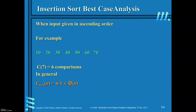Now for the best case analysis. Whenever the input is already given in ascending order, the best case occurs. In the best case, the number of comparisons is n−1. For 7 elements that are already sorted, only 6 comparisons are required — the minimum. In general, if there are n elements in the array, the number of comparisons equals n−1, which belongs to Θ(n).